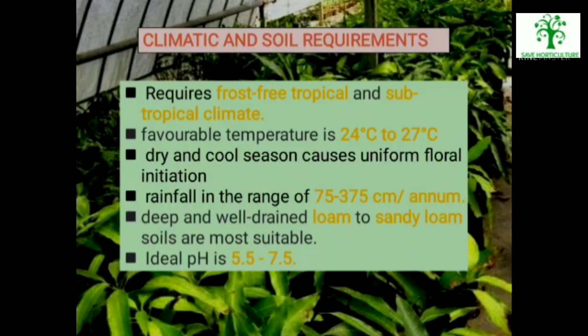Climatic and Soil Requirements: The prime climate for mango cultivation is seasonally wet and then seasonally dry. A dry and cool season causes uniform floral initiation and importantly synchronizes bloom and harvest. Temperatures below 15°C or above 37°C at flowering may cause flower abortion, loss of pollen viability and occasionally seedless fruit development. Fruit growth ceases at a temperature below 12°C to 15°C. Favorable temperature for mango production is 24°C to 27°C.